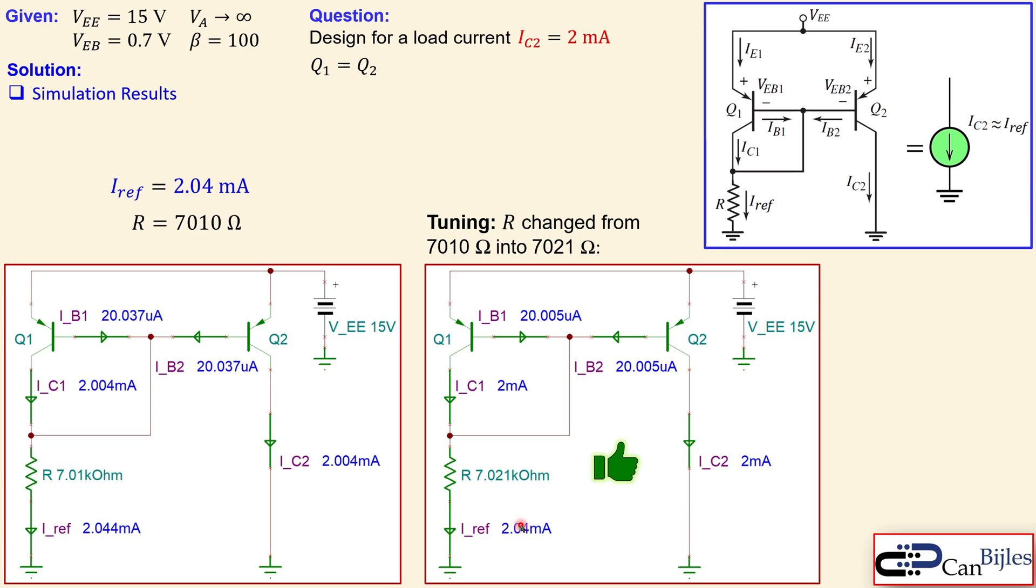Alright guys, this is our example number 7 using the PNP BJTs in order to use this simple current mirror and also produce this load current for this circuit.